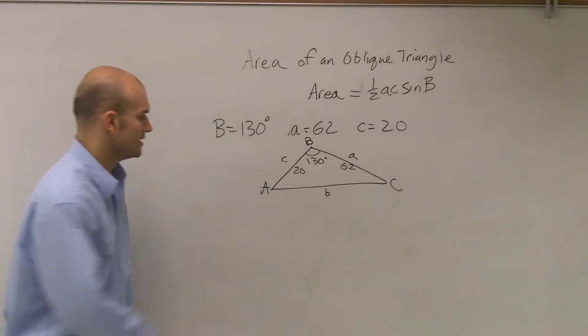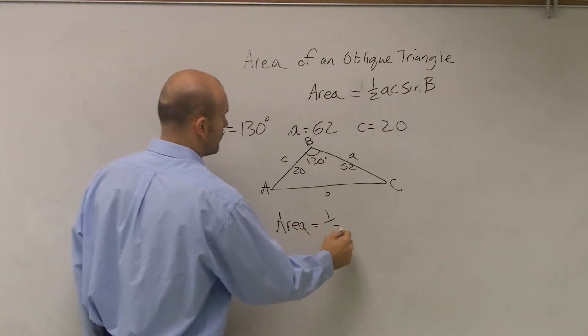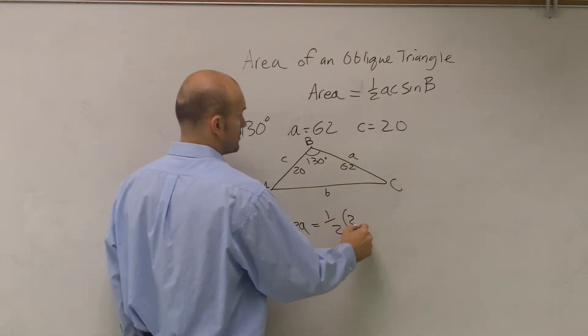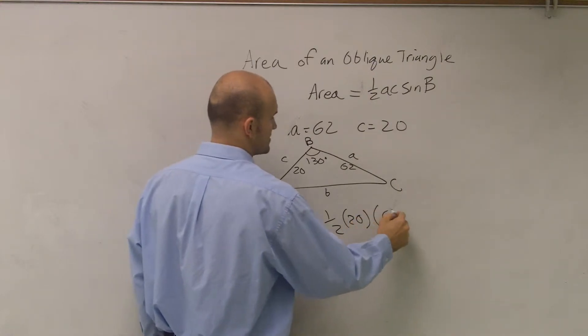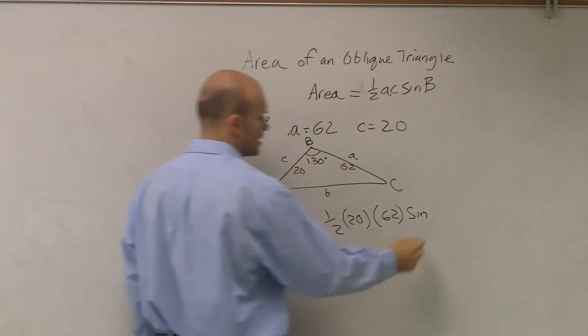So now let's just go and plug it in. So the area of the triangle is equal to one-half times 20 times 62 times sine of B, which is 130 degrees.